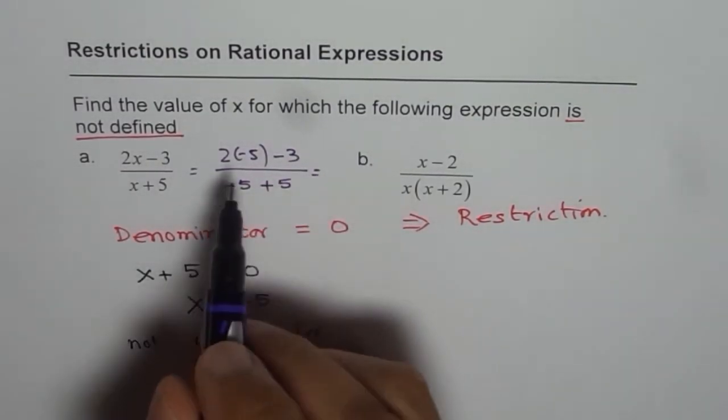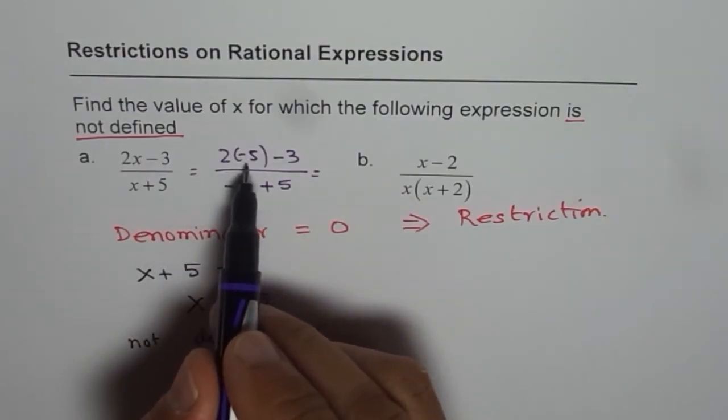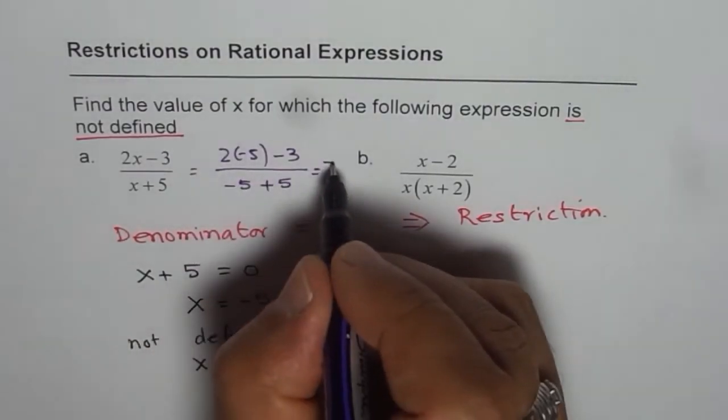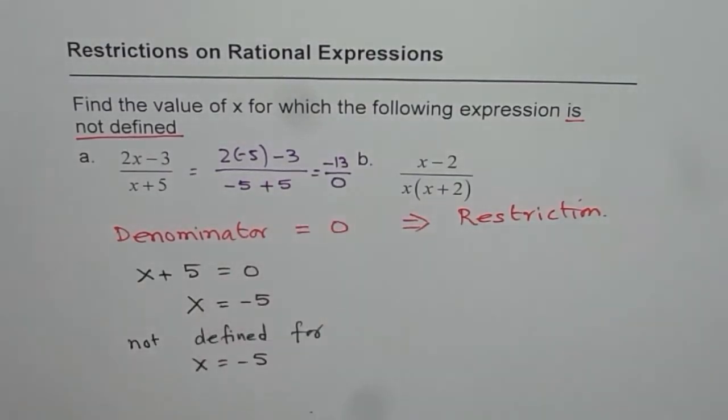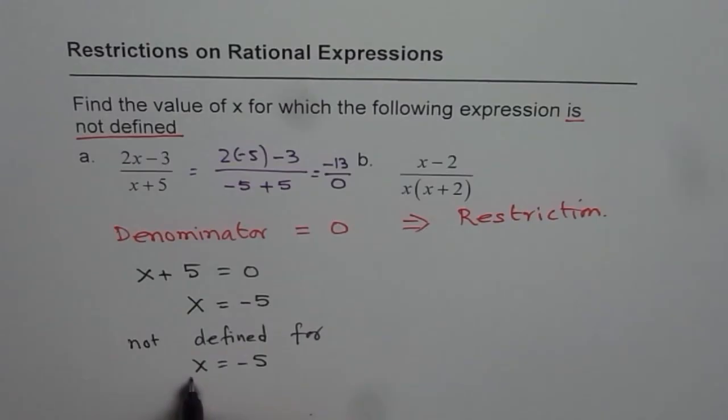So what you get here is 2 times minus 5 is minus 10. Minus 10 minus 3 is minus 13 divided by 0. Can you divide by 0? No you can't. And that is why we have this restriction. We say this expression is not defined for x equals to minus 5.